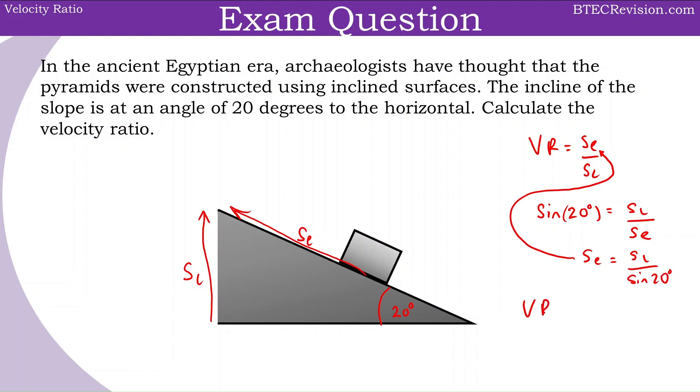And if we do that, that gives us velocity ratio equals SL divided by SL sine 20 degrees. So the SLs cancel, and we're left with one over sine 20 degrees. If we plug that in the calculator, we get a value of 2.92.